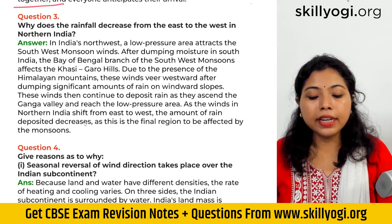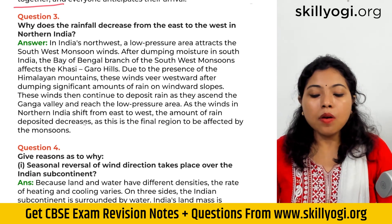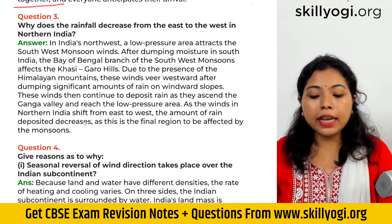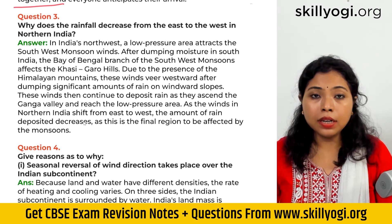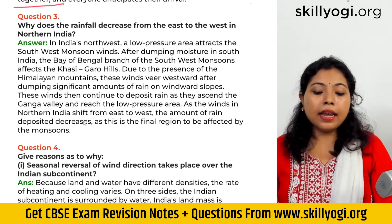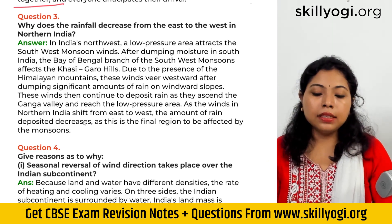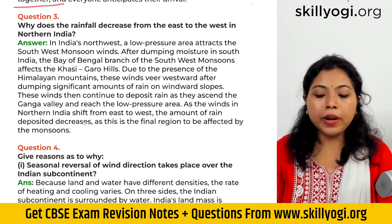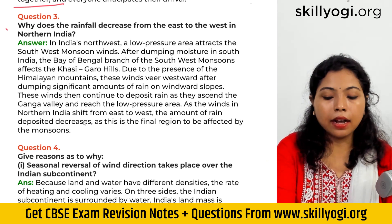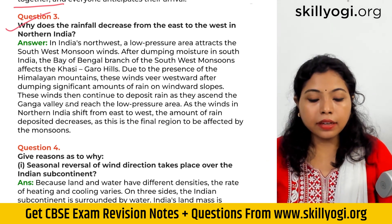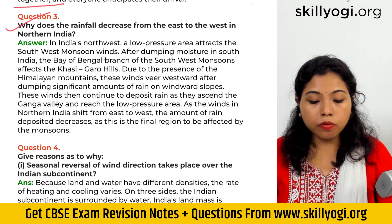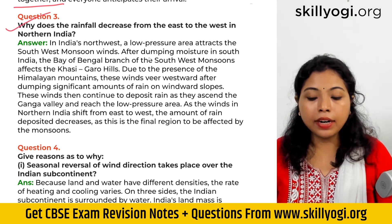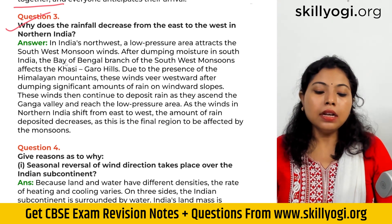Why does the rainfall decrease from the east to the west of northern India? In India's northwest, a low-pressure area attracts the southwest monsoon winds. After dumping moisture in south India,